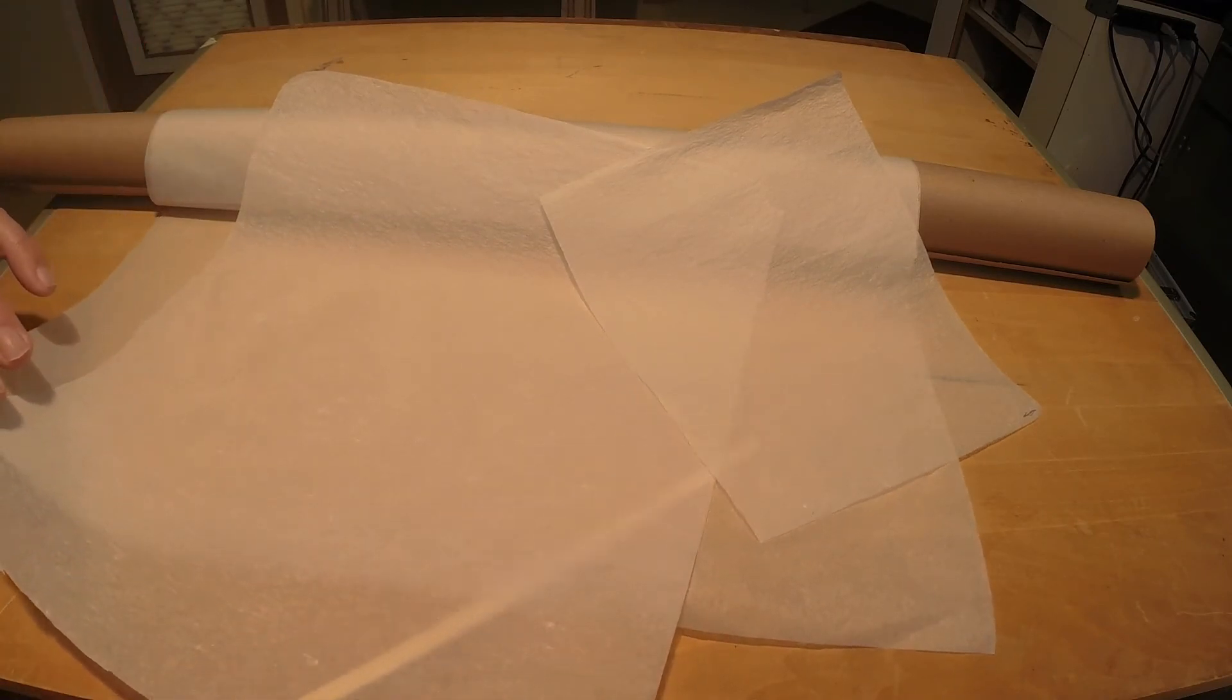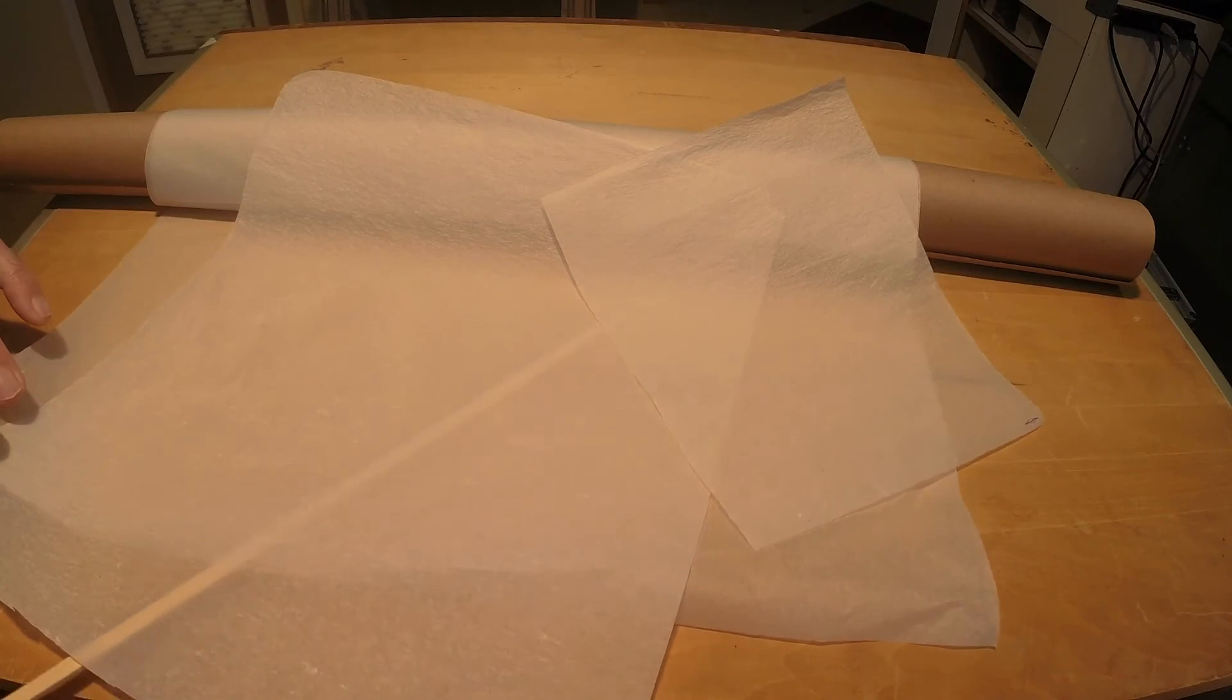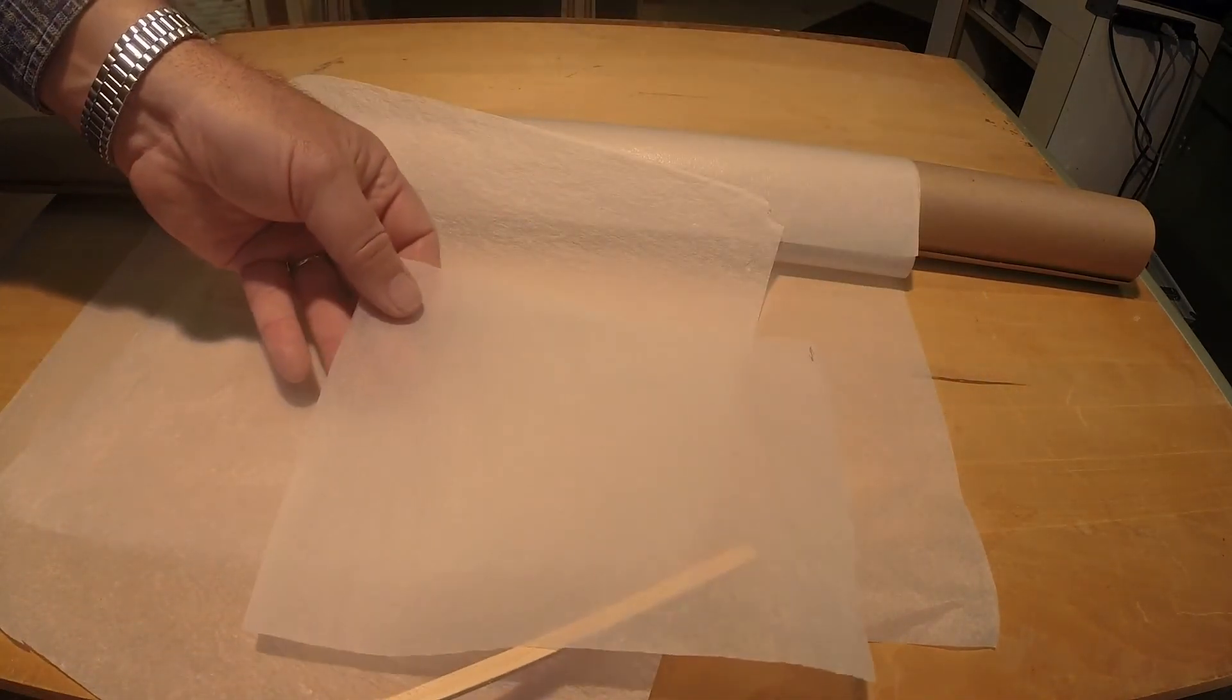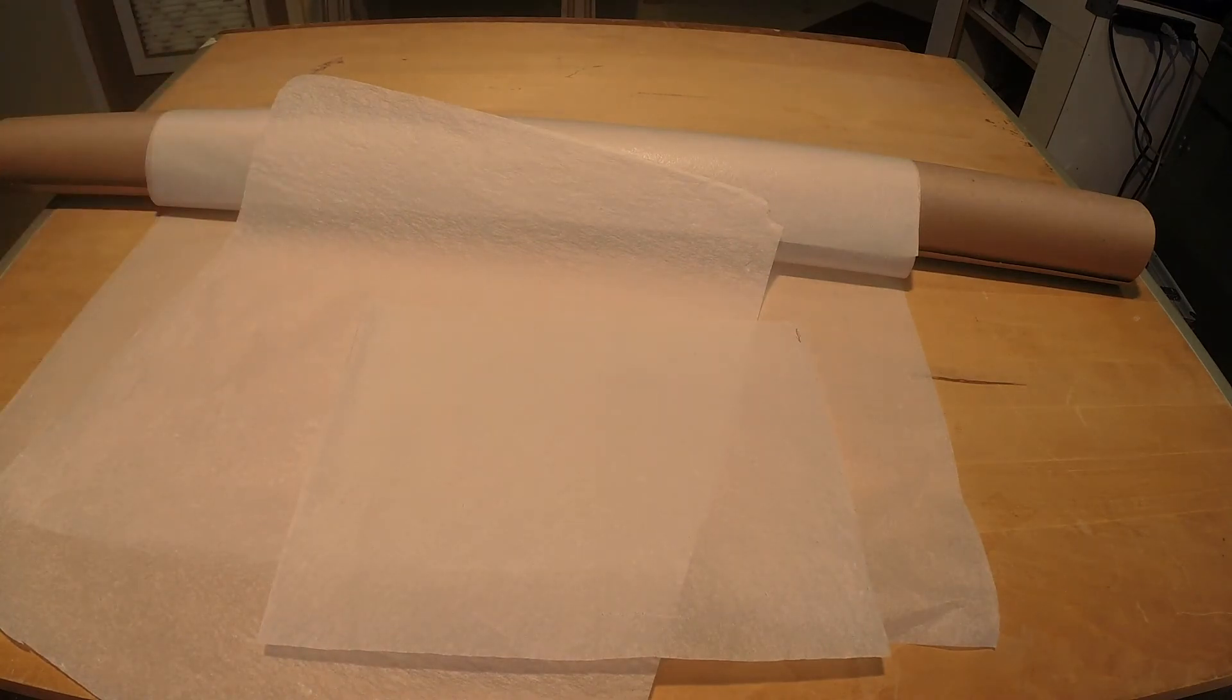The paper coverings can be further divided into tissue and condenser paper, with tissue being by far the most popular. In this video, only tissue will be addressed. Condenser paper is difficult to use compared to tissue and its availability is limited.